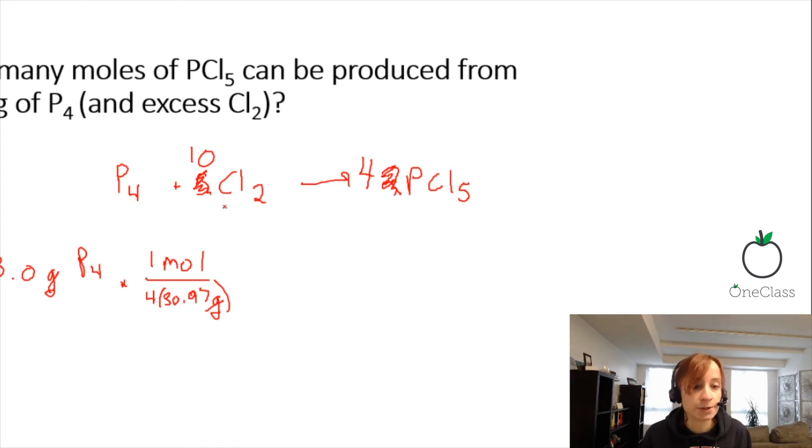But we don't need to know the number of moles of P4. We need to know it, but that's not the end of the question. We need to know how many moles of PCl5. So to do that, we will look at our balanced chemical equation. So this is 1 mole of P4. It's good to keep the compounds listed. You'll see why in a second.